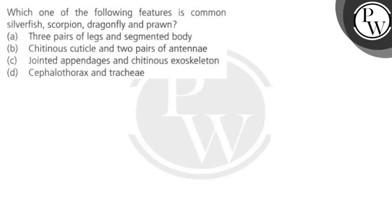Hello children, let's read the question. The question says: which one of the following features is common in silverfish, scorpion, dragonfly, and prawn? We have given some options and we will tell you which option is correct.